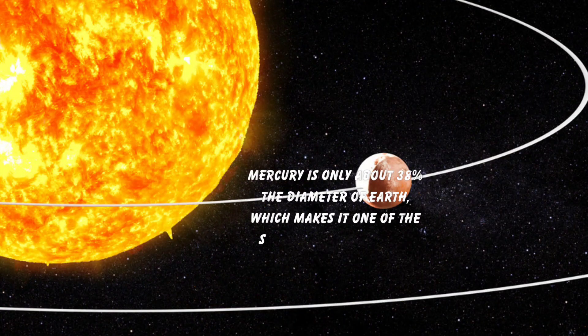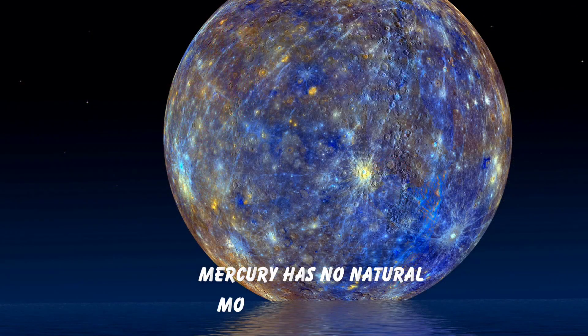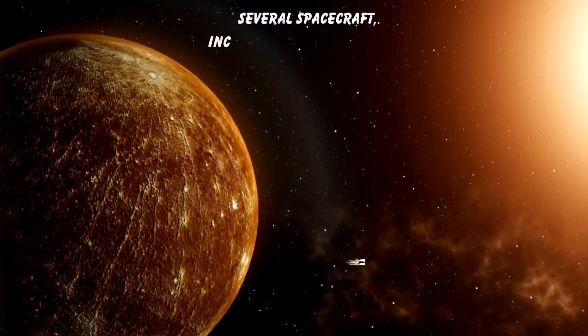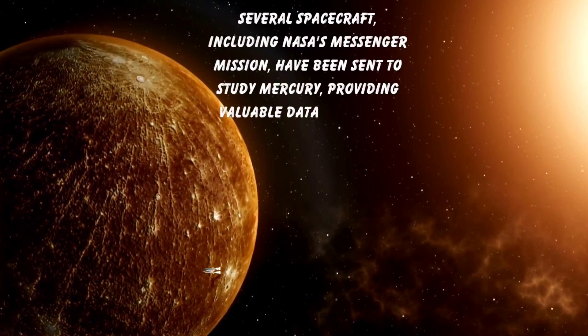Mercury is only about 38% the diameter of Earth, which makes it one of the smallest planets in the solar system. Mercury has no natural moons or satellites. Several spacecraft, including NASA's MESSENGER mission, have been sent to study Mercury, providing valuable data about this planet.